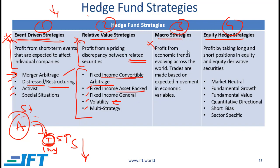Macro strategies profit from economic trends evolving across the world. Trades are based on expected movement in economic variables — for example, if you expect interest rates to go up globally and trade based on that view, or if you have a certain view on currencies or inflation, that would be referred to as a macro strategy.